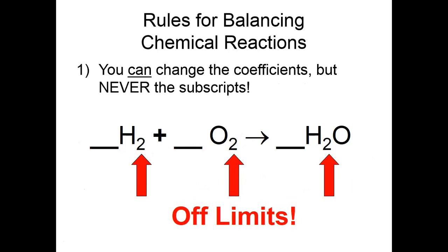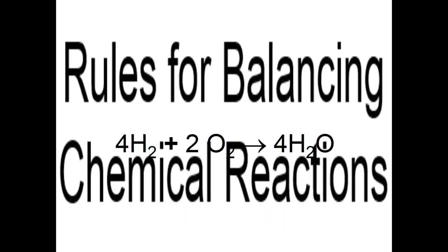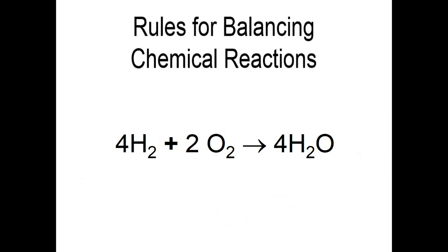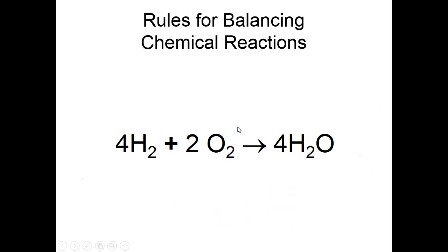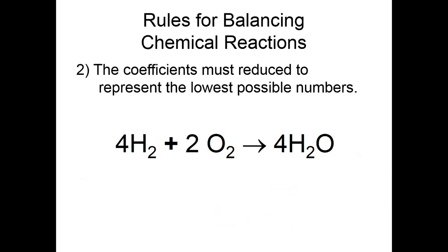You can change the coefficients but never the subscripts. By trial and error, we can find that 4H2 + 2O2 gives 4H2O. The coefficients must reduce to represent the lowest possible numbers.